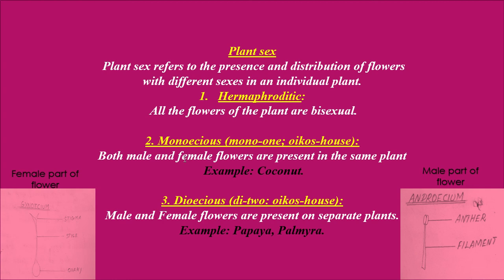The next type is monoecious. If both male and female flowers are present in the same plant — the male flower as a single flower and the female flower as a separate flower, that means two different flowers — one male and one female present on the same plant, then it is said to be monoecious. Example: coconut.